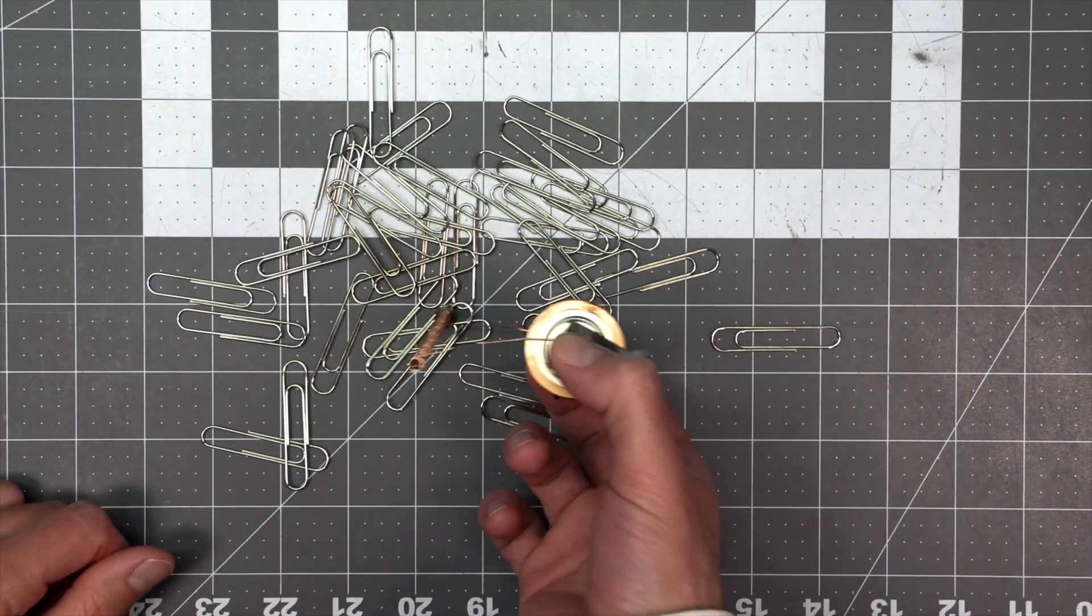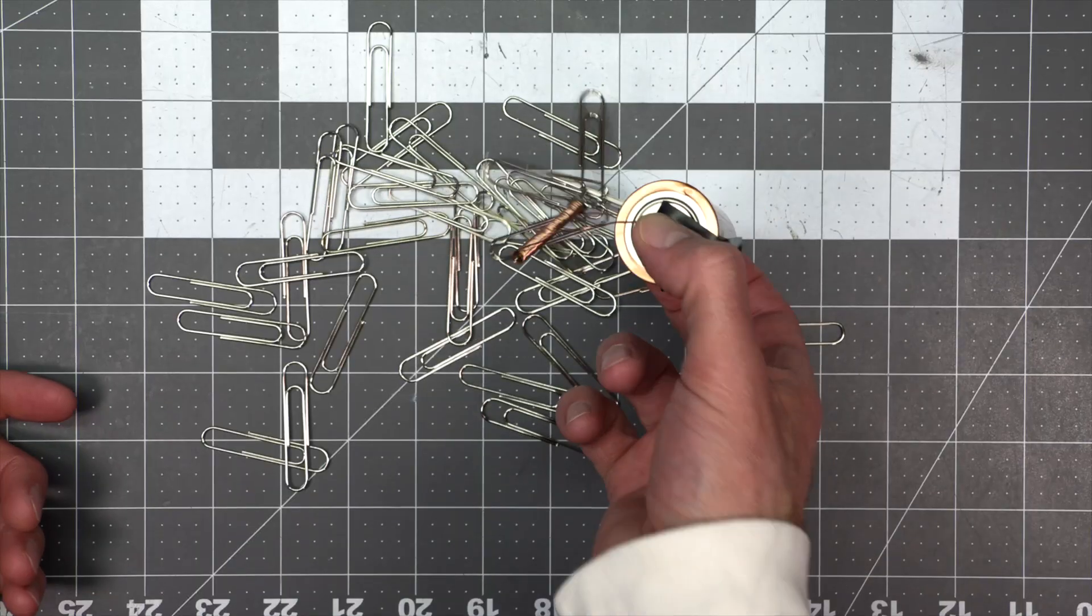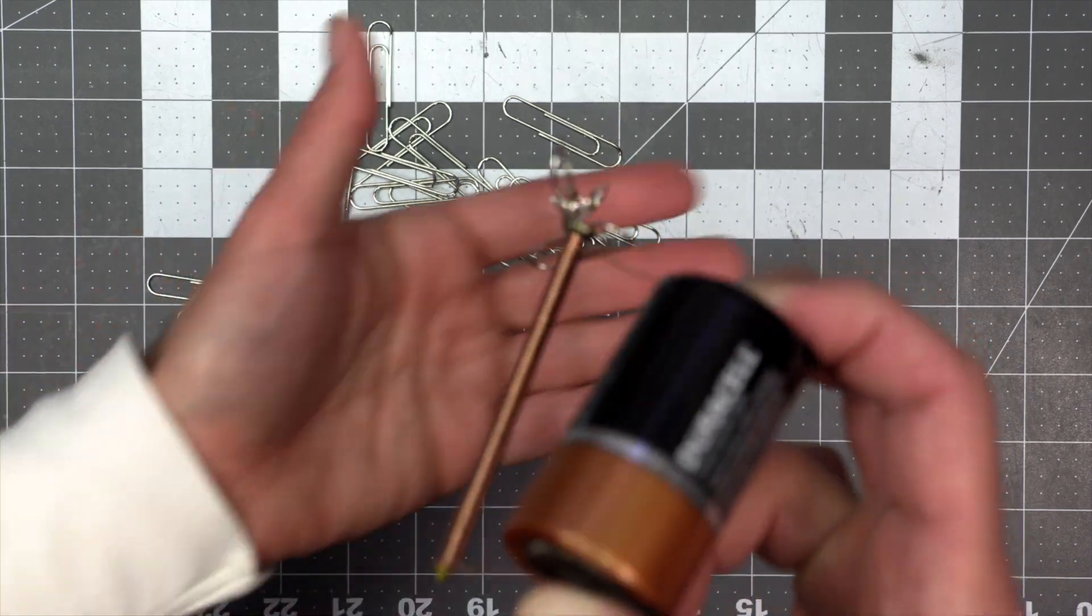You can experiment with different size batteries and different voltage batteries. I found the D cell to work better, probably because it can provide more current.